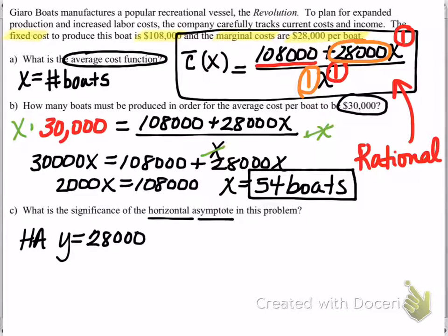But part C is not asking you what the horizontal asymptote is, but it's asking you for the significance of the horizontal asymptote. So we need to write a sentence about this number, 28,000, and what it means in the context of this situation. In other words, we're producing boats, and what does this 28,000 mean?